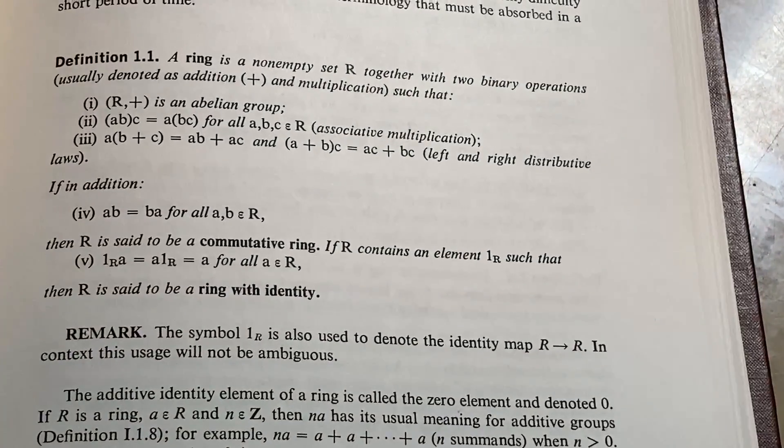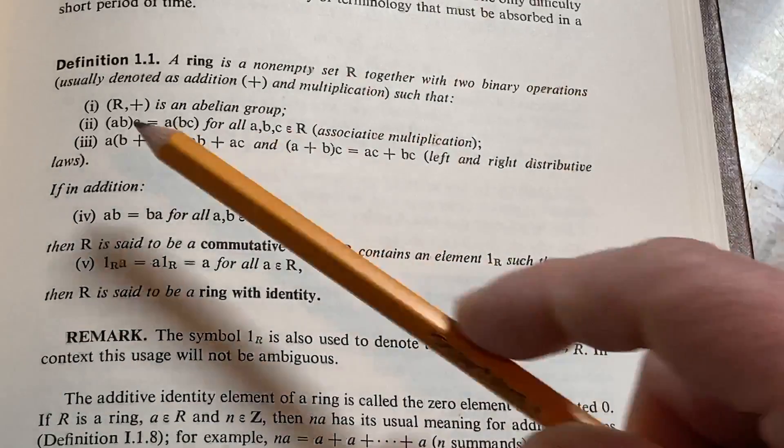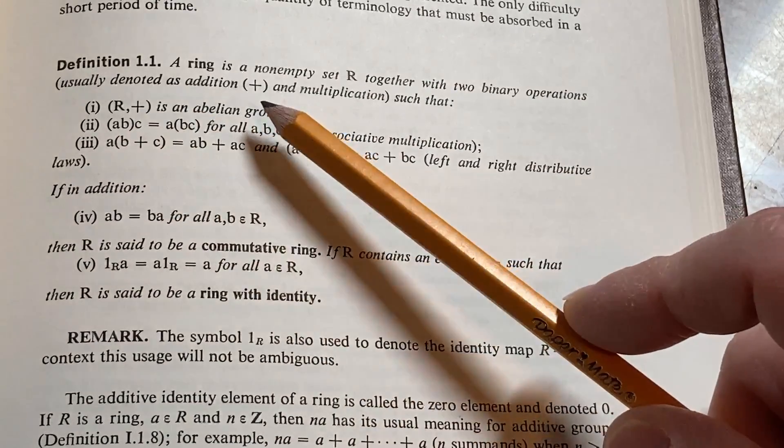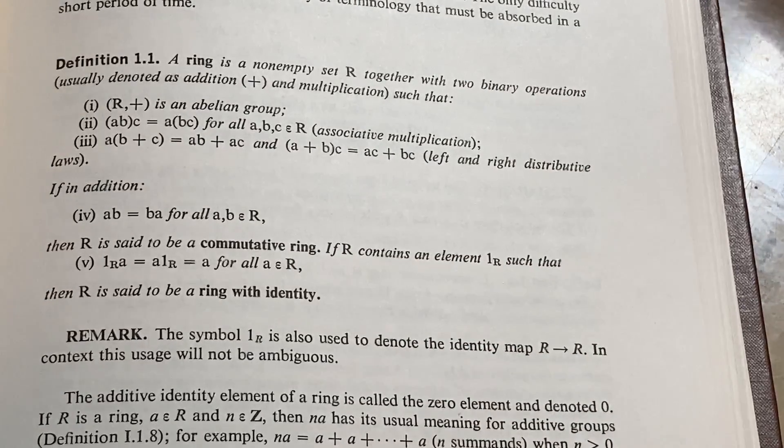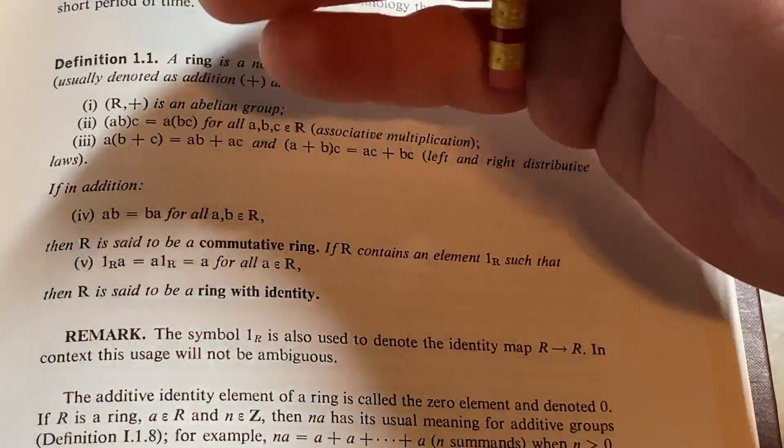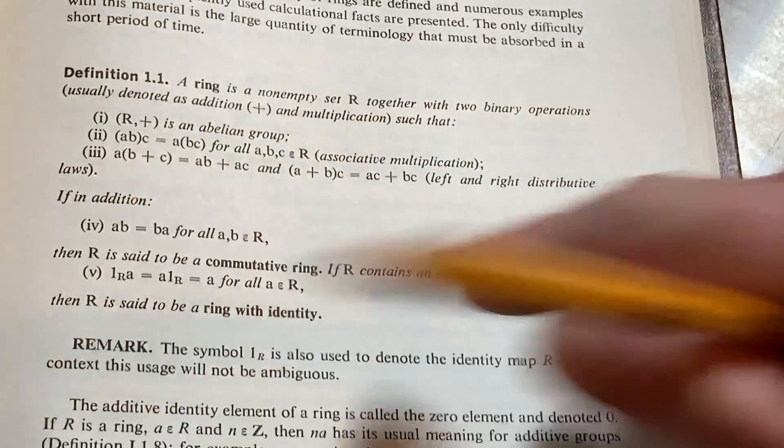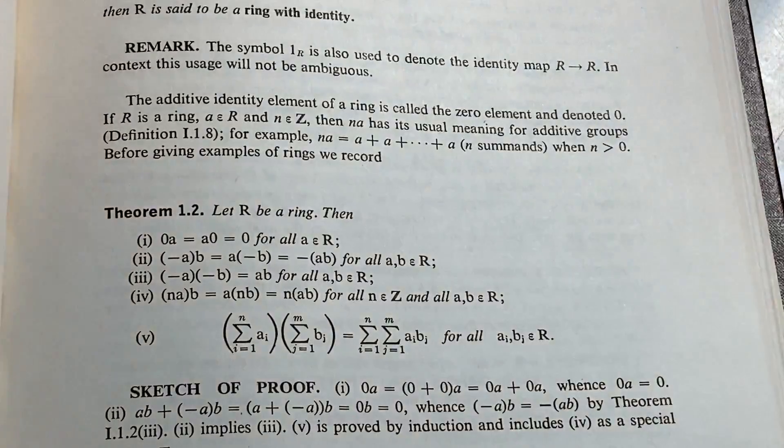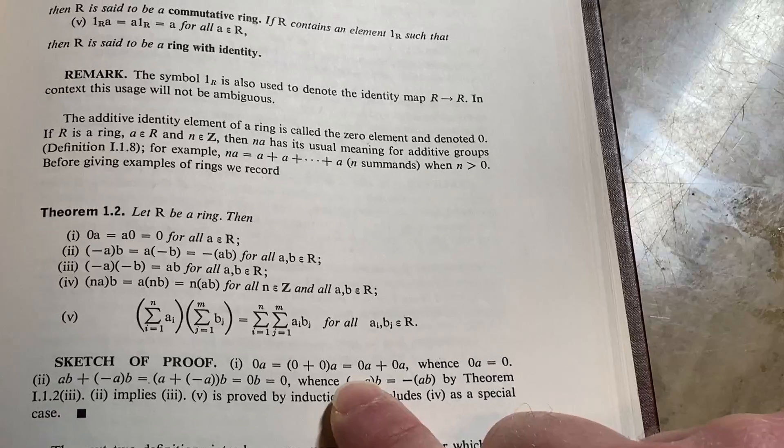And in the definition of a ring, the first condition is that R under addition is an abelian group. Well, what is the identity element there? Well, that would be the number 0, and so 0 + 0 is equal to 0. That's because R under addition is an abelian group. So that's the additive identity in the ring.